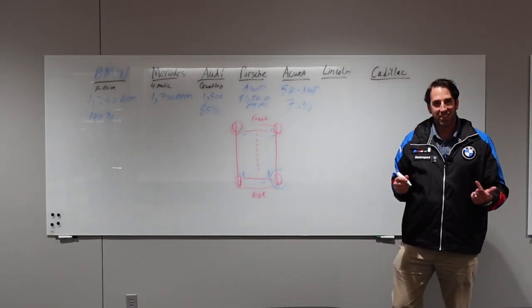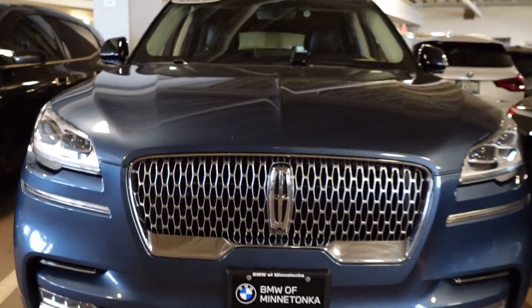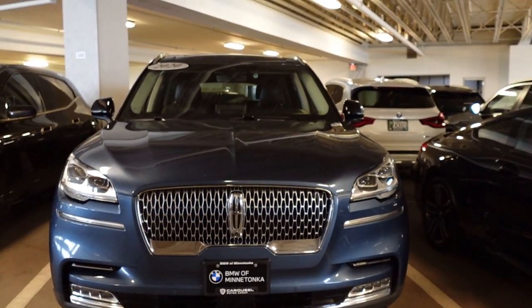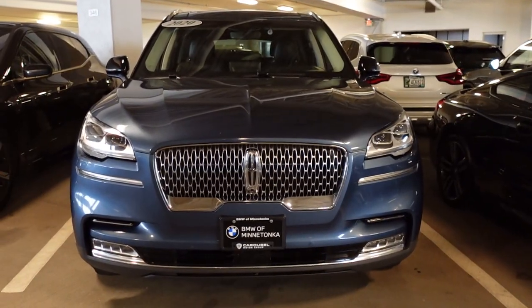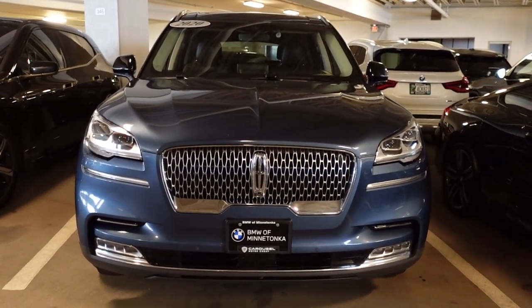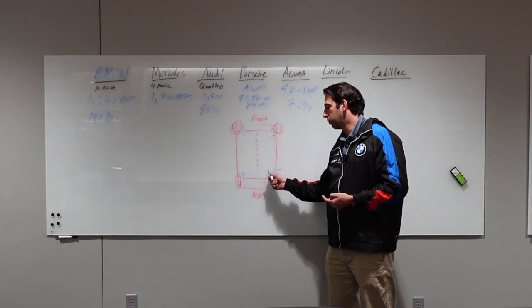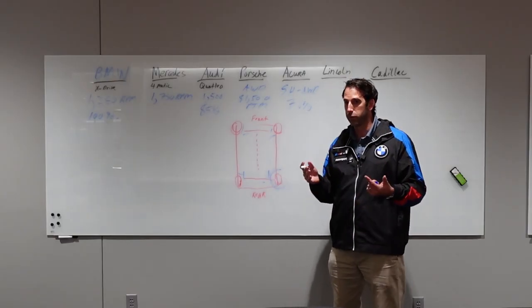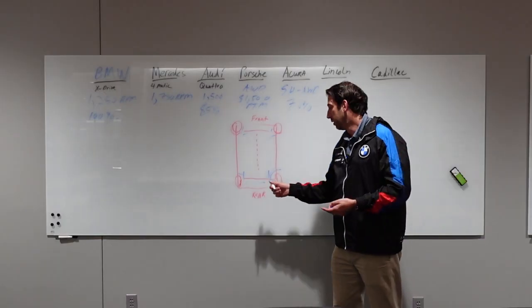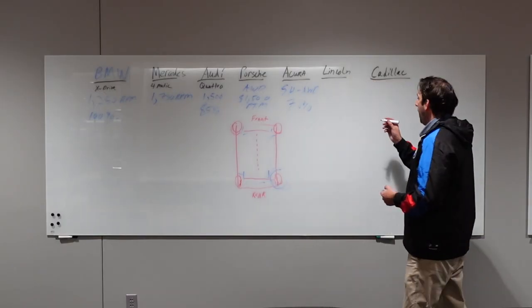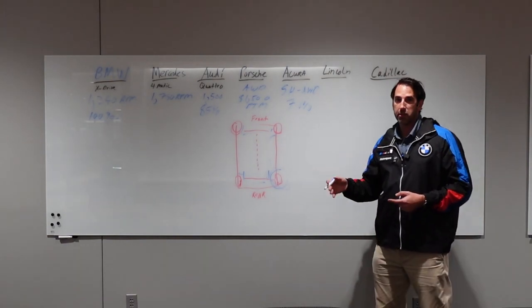Moving over to the domestic side of things, we have Lincoln and their system is the intelligent all-wheel drive system. But with Lincoln, they can't send 100% of all power to the back and to one individual wheel. It can't send all available power to one wheel in the back if need be. Again, the xDrive has the edge there.